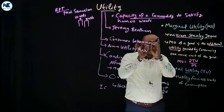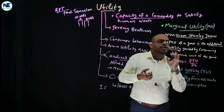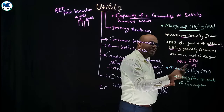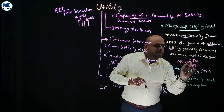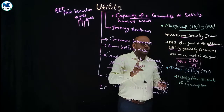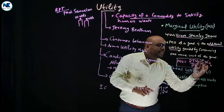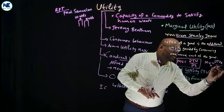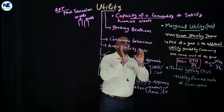Marginal utility of a good is the additional or extra utility gained by consuming one more unit of the good. The formula is: marginal utility equals change in total utility divided by change in quantity. For commodity x, MUx equals change in TUx divided by change in Qx. That is, the additional utility gained by consuming one more unit of the good.